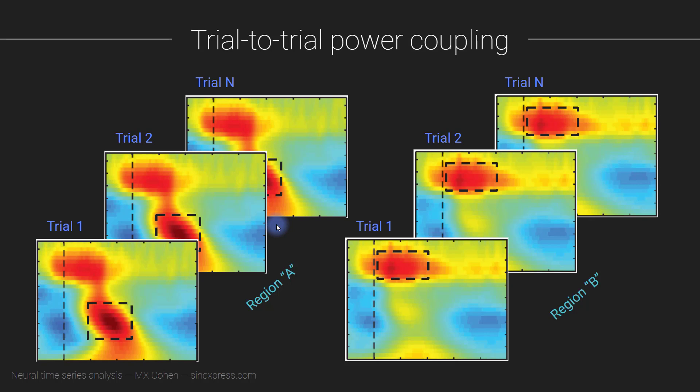You can see that with this method, trial-to-trial power coupling, similar to the previous method of amplitude envelope correlations, there are many, many, many possibilities for how to set up this analysis. Because these time-frequency windows can be placed basically anywhere that seems feasible, anywhere that seems appropriate. And you can also have multiple windows. You know, maybe you also want to draw a time-frequency window here around this blue blob, and then you could see whether this is correlated with this and also whether this is correlated with this over trials.